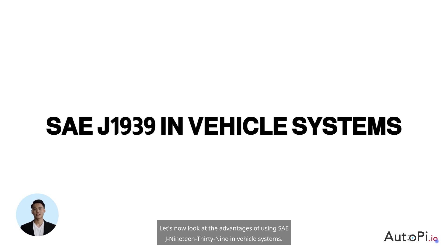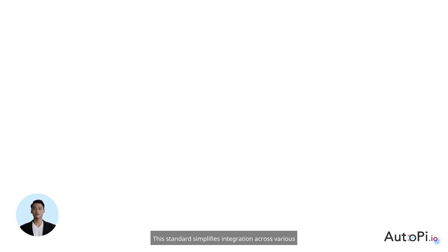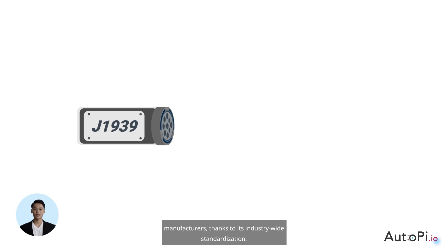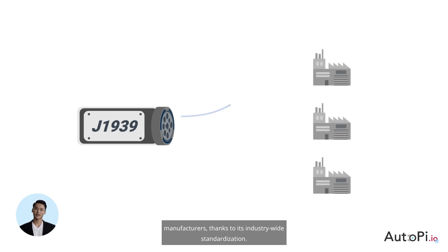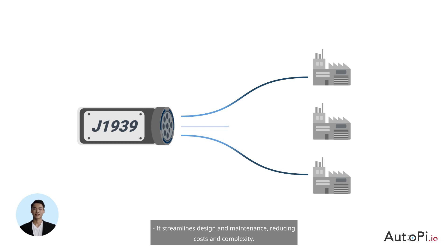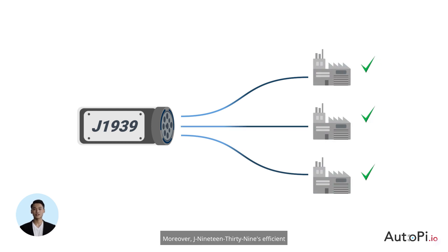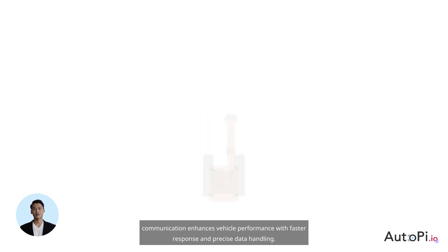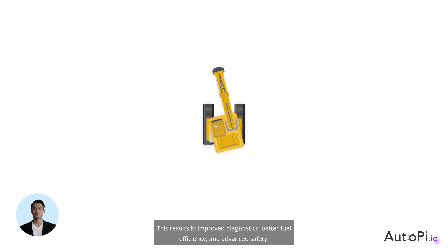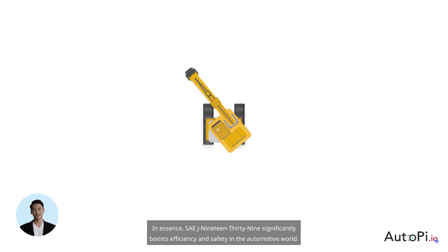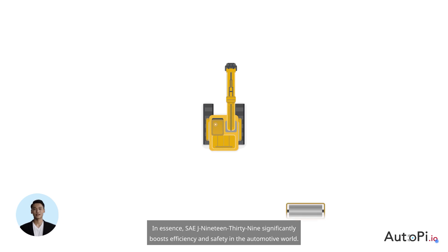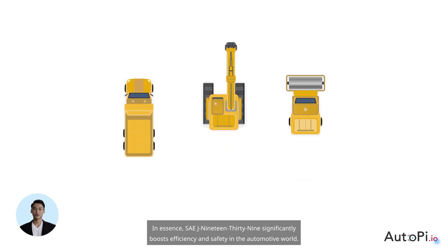Let's now look at the advantages of using SAE J1939 in vehicle systems. This standard simplifies integration across various manufacturers, thanks to its industry-wide standardization. It streamlines design and maintenance, reducing costs and complexity. Moreover, J1939's efficient communication enhances vehicle performance with faster response and precise data handling. This results in improved diagnostics, better fuel efficiency, and advanced safety. In essence, SAE J1939 significantly boosts efficiency and safety in the automotive world.